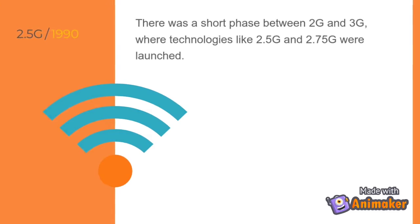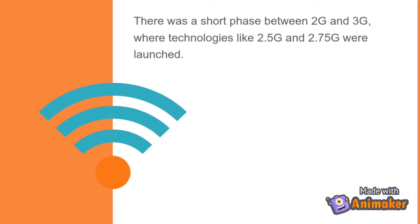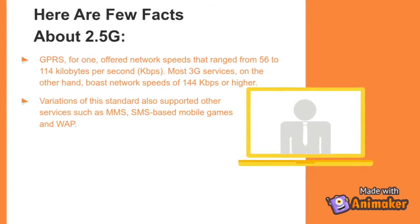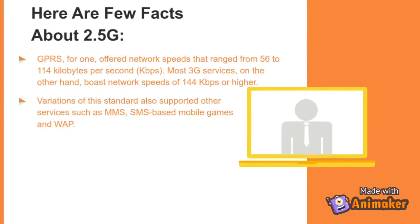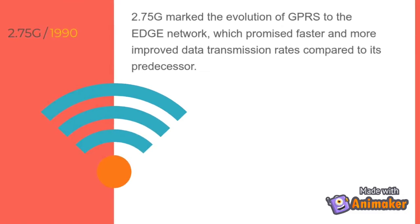There was a short phase between 2G and 3G where technologies like 2.5G and 2.75G were launched. 2.5G GPRS offered network speeds ranging from 56 to 114 kilobytes per second (Kbps). Most 3G services boast network speeds of 144 kilobits per second or higher. Variations of the standard also supported other services such as MMS, SMS-based mobile games, and WAP.